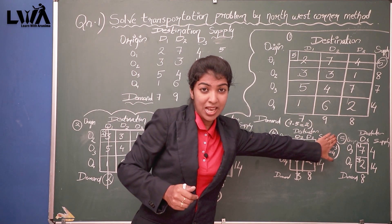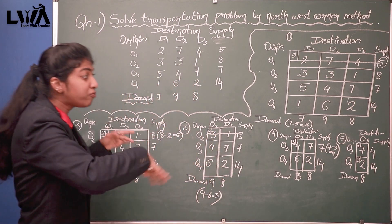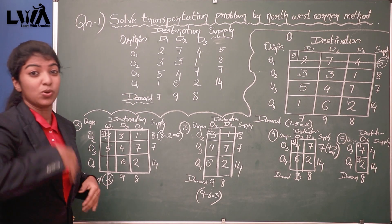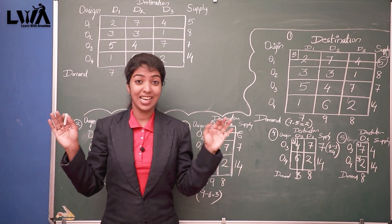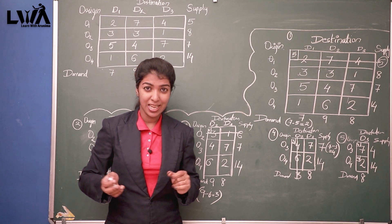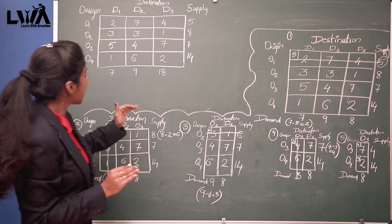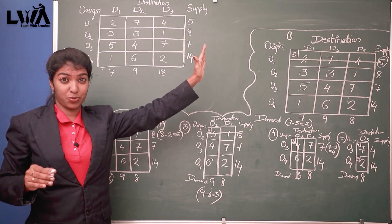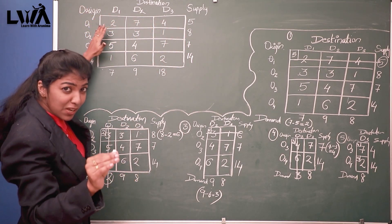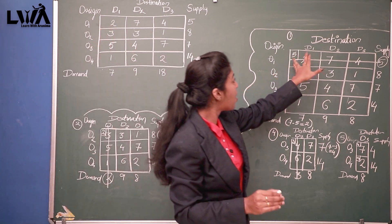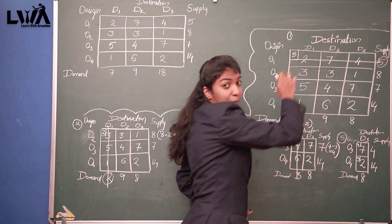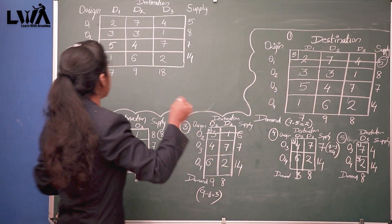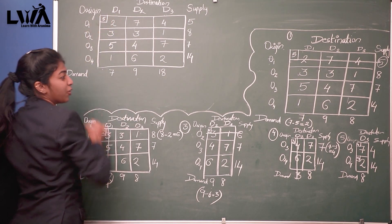This is the last part of the method. Now the next step is to redraw the first matrix. Just look at the question or our first matrix and redraw it. We are moving to the conclusion — we have to mark all the allocated items within the corresponding cells of the original matrix.